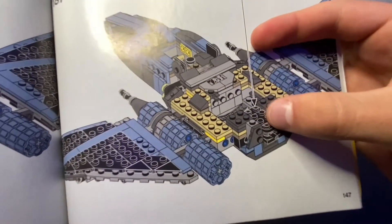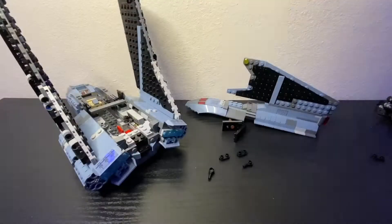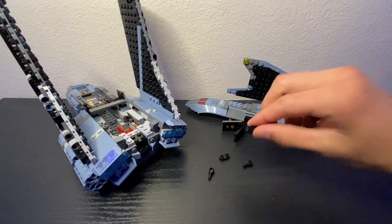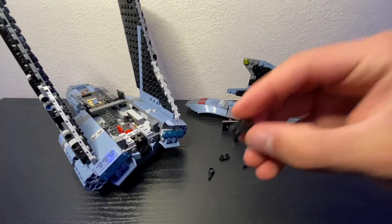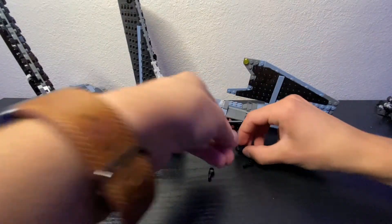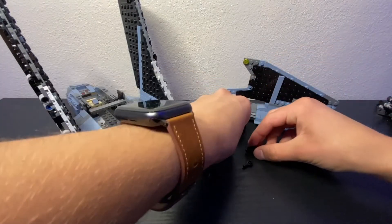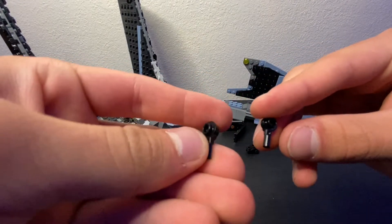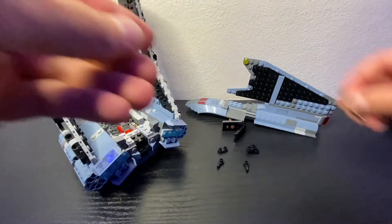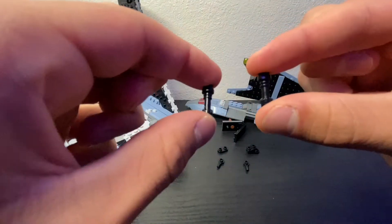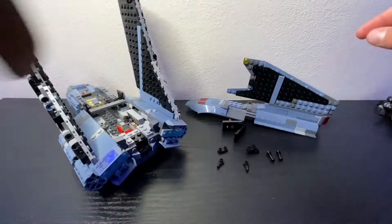Which is basically the same thing that the guns were originally sitting on. So you're going to want to have three of these pieces, these two pieces right here, and then you're going to want two black lightsaber hilts. All right.